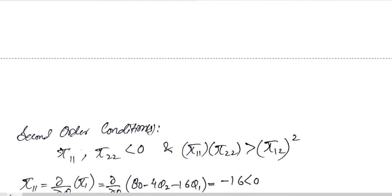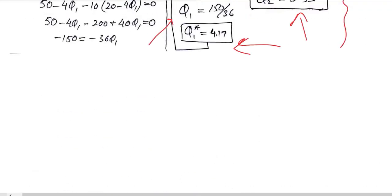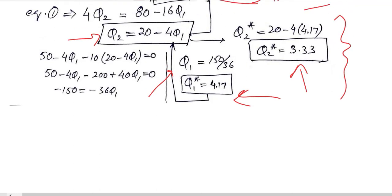And then we have to calculate the second order condition requirements. This is the critical value, the couple of it, because we have two independent variables, so there is a couple of critical values.